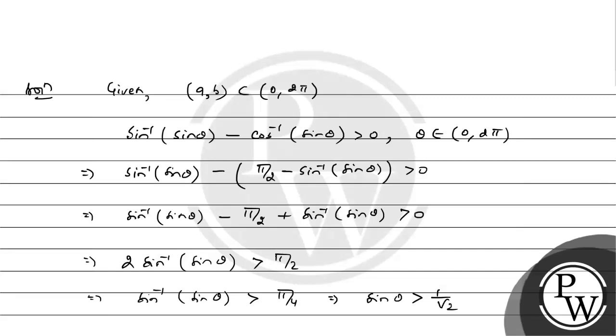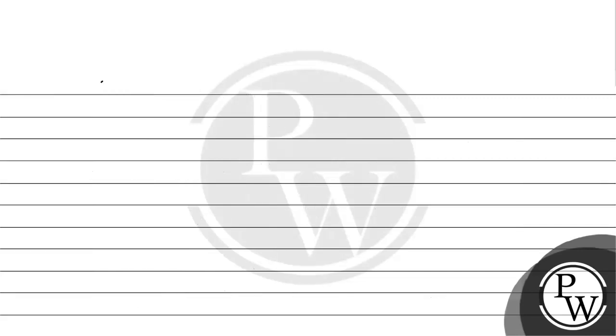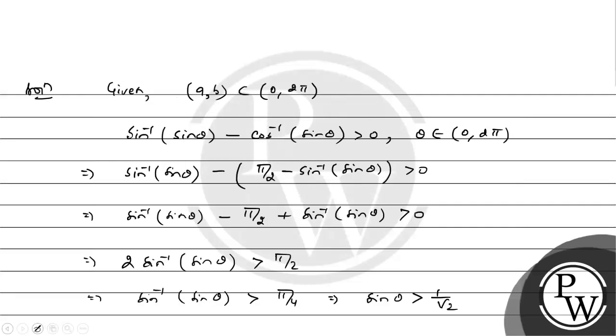Sin θ greater than 1/√2 and θ lies between 0 to 2π. Therefore, θ between π/4 and 3π/4. This is our interval (a,b), that is a = π/4 and b = 3π/4.